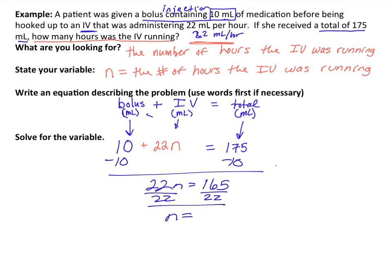So, 165. We'll put this in our calculator. If you know that without a calculator, that's great. But 165 divided by 22, you get 7.5. What does this actually mean? What was N? We have to go back and summarize what we actually found. Well, if I go up top again, N was the number of hours that the IV was running. So, this was running for 7.5 hours or 7 hours and 30 minutes.